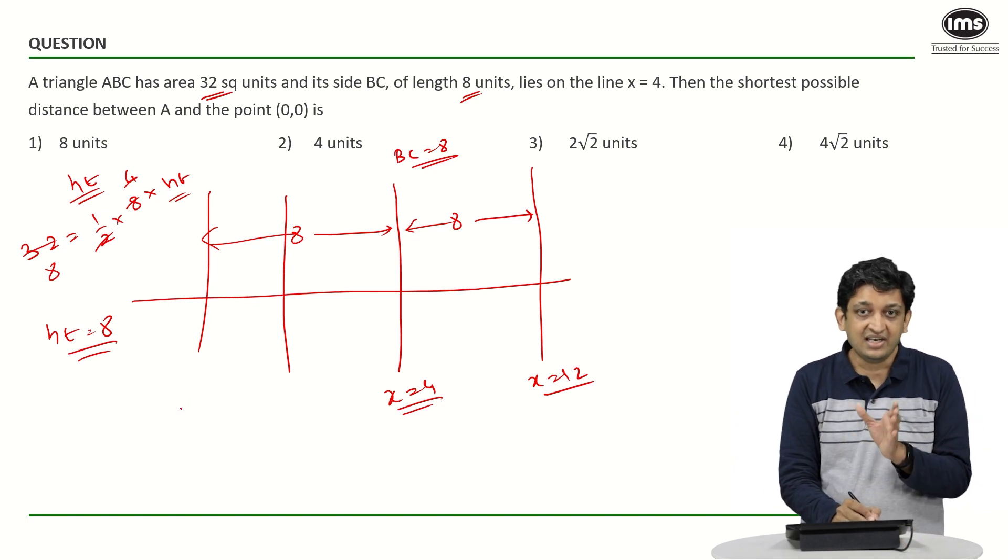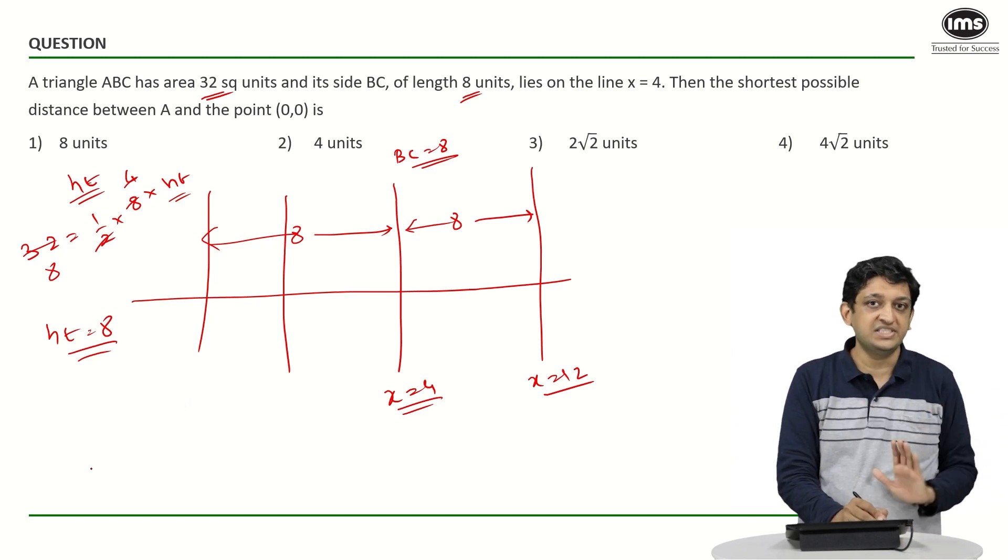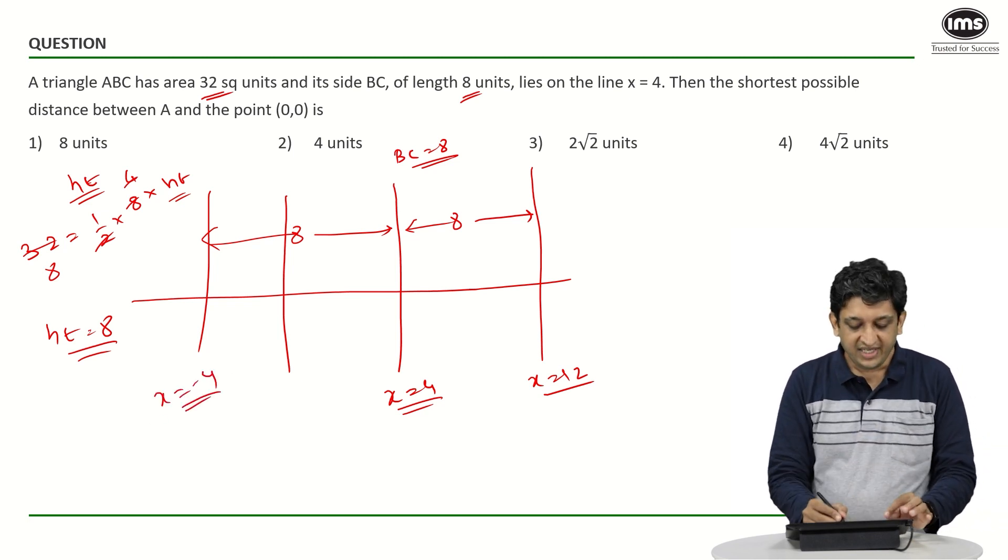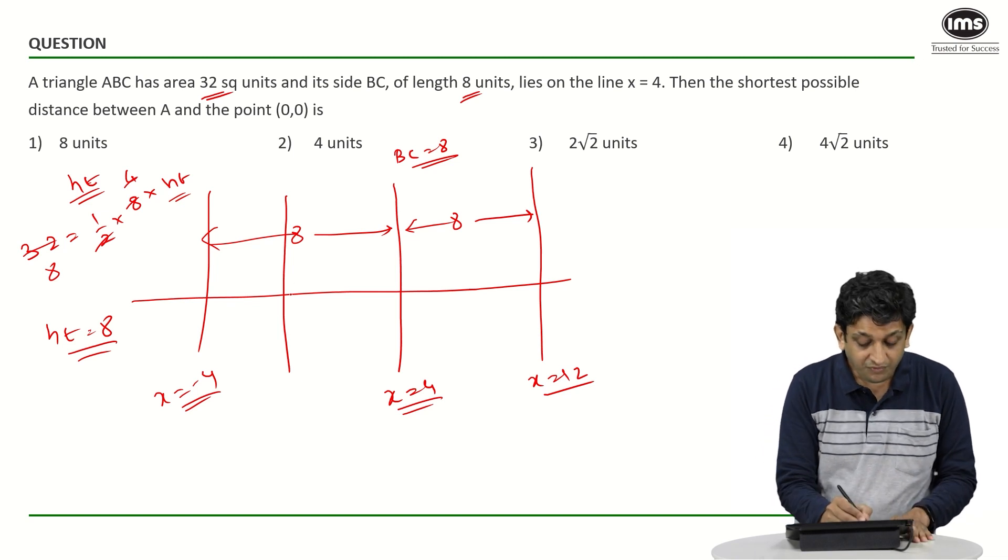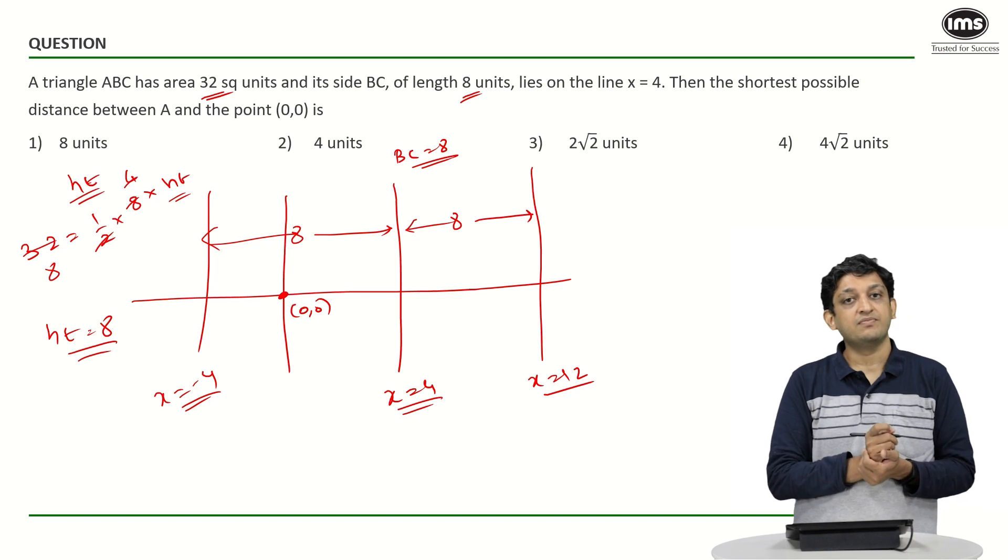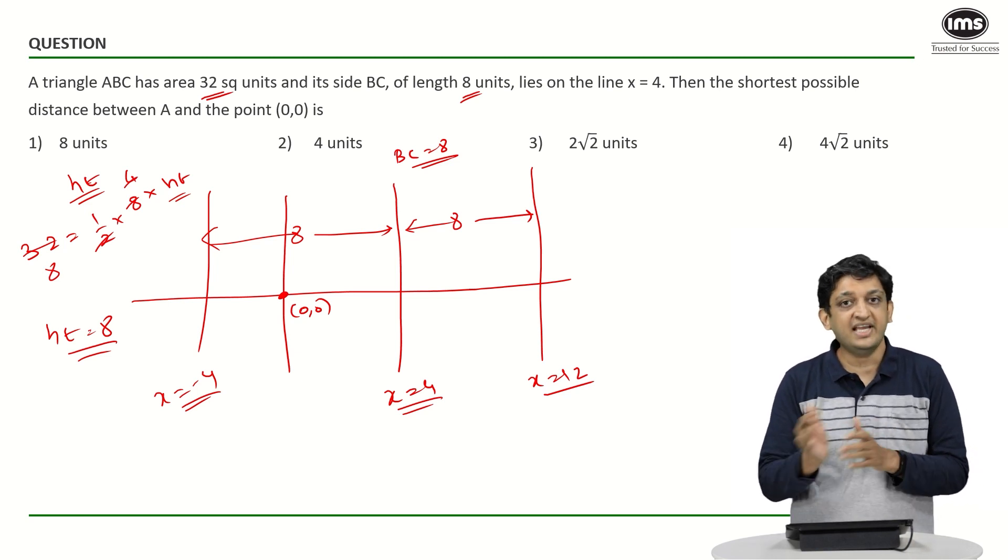So A will lie on one of these lines. We have to find what is the shortest distance of A from the origin. Which line do you think should A lie on? Obviously, any point on this line will be farther compared to any point on this line that we would have drawn.